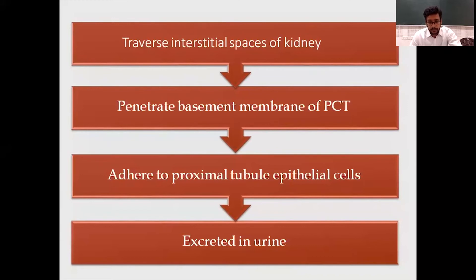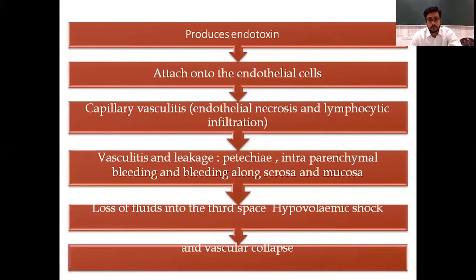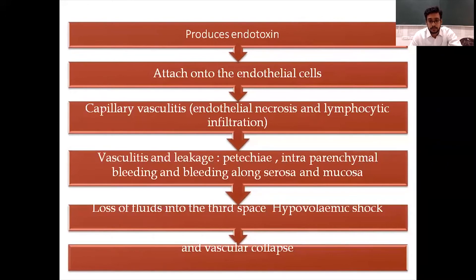The organism escapes into the interstitial space of the kidneys, penetrates the basement membrane, adheres to proximal tubular epithelial cells, and is excreted through the urine. It produces endotoxins and attaches to endothelial cells, leading to capillary vasculitis. This vasculitis and leakage causes petechiae, intraparenchymal bleeding along the serosa and mucosa — manifesting as oral bleeding. Loss of fluids into the third space ultimately leads to hypovolemic shock and vascular collapse.